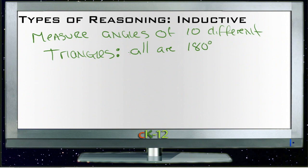and it turns out they all are 180 degrees, then you might be tempted to say that based on those ten different specific examples, you could make the statement that all triangles are 180 degrees.